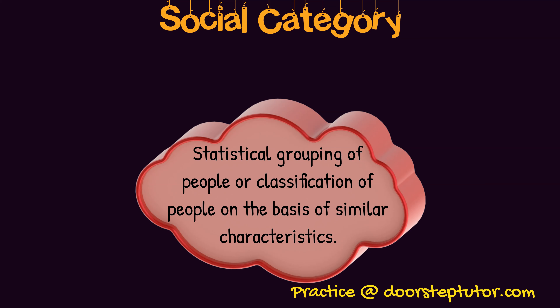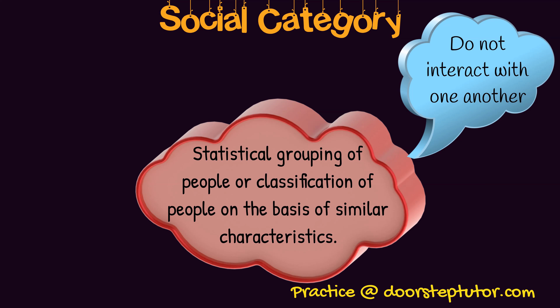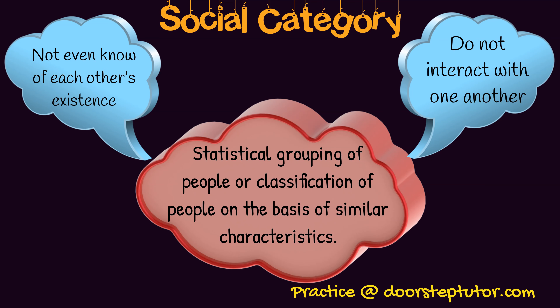The grouping is statistical in nature. Two key features: first, there is no interaction among the people because it is not a group based on interaction or common interest — it is by virtue of statistics and similarity of characteristics. Second, they may not even know about each other's existence; perhaps the interview was done by phone call and people were simply grouped by characteristics. This is how a quasi-group is formed.